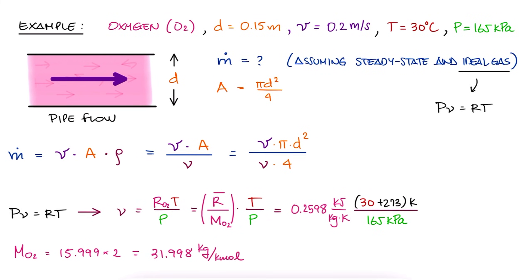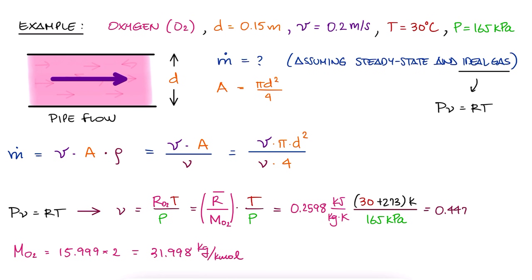This would result in a specific volume of 0.447361 cubic meters per kilogram, and after substituting this in the mass flow expression, substituting the values for the diameter and the given velocity, we would find that the mass flow rate is 0.007404 kilograms per second, or 7.40 grams per second.